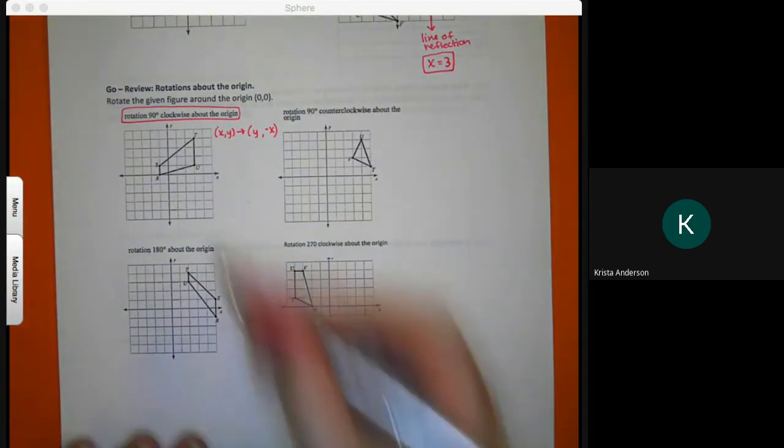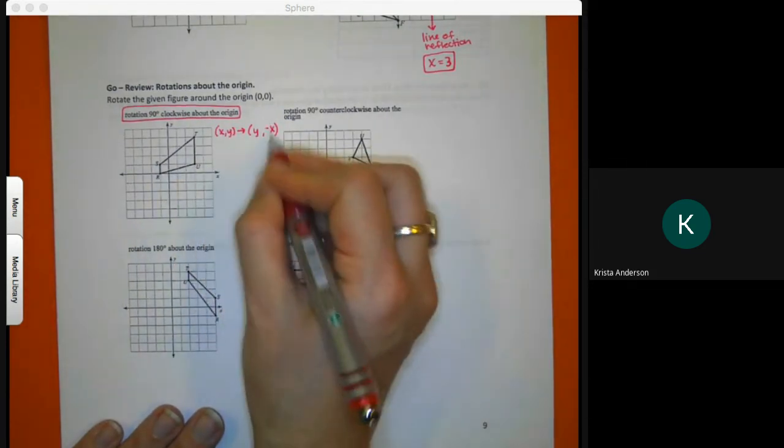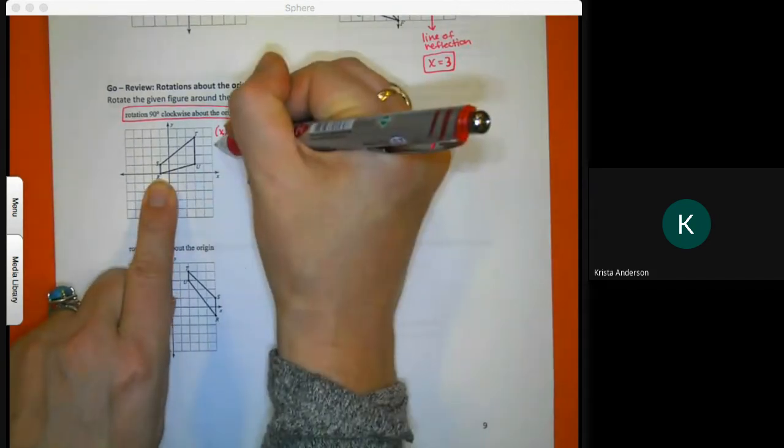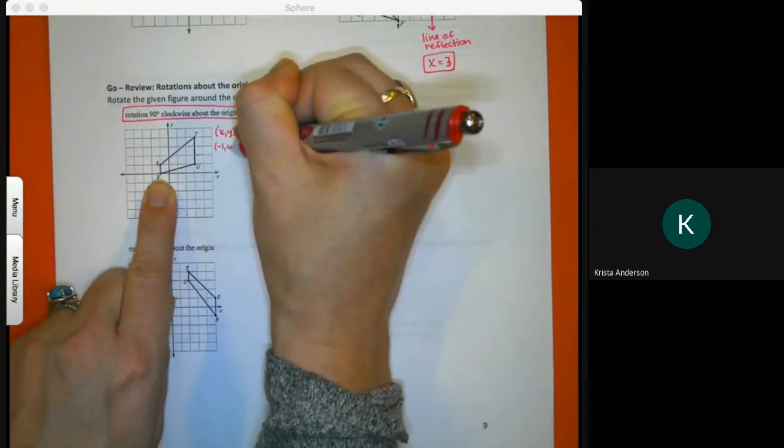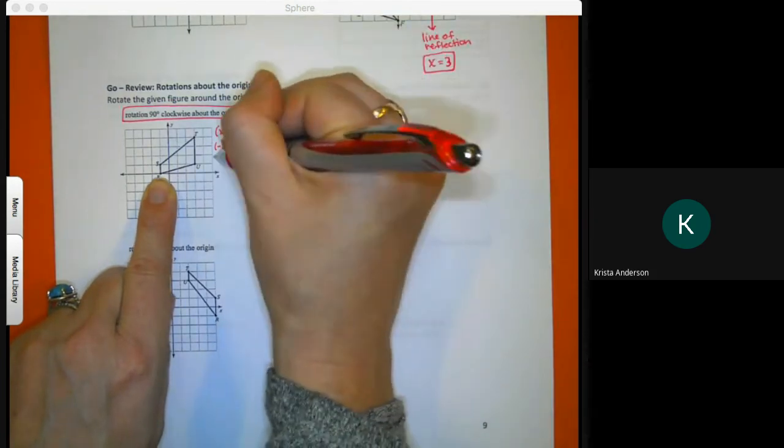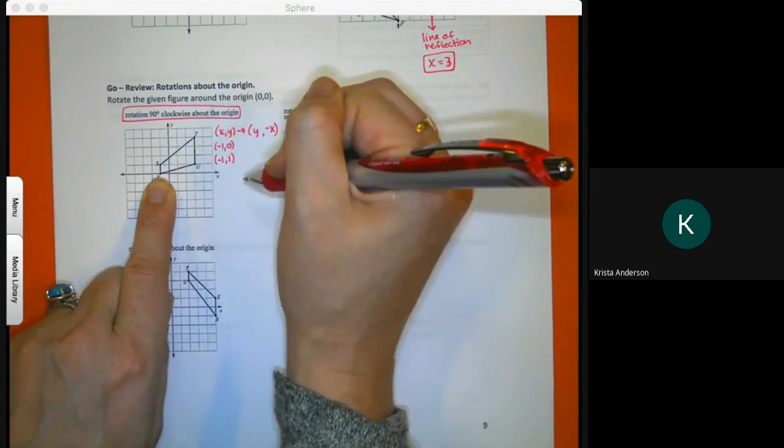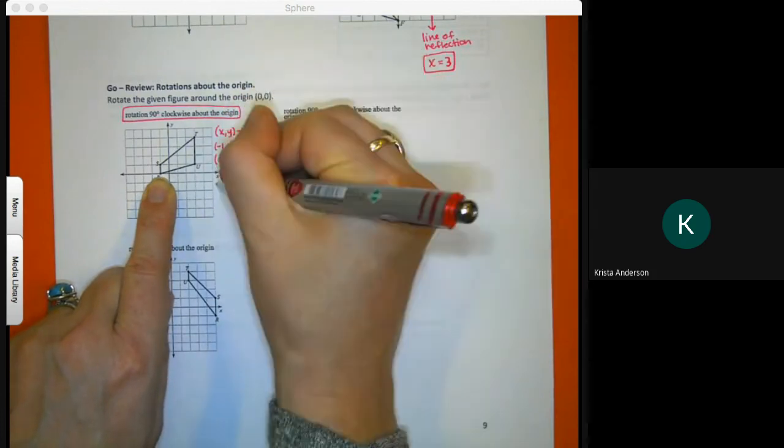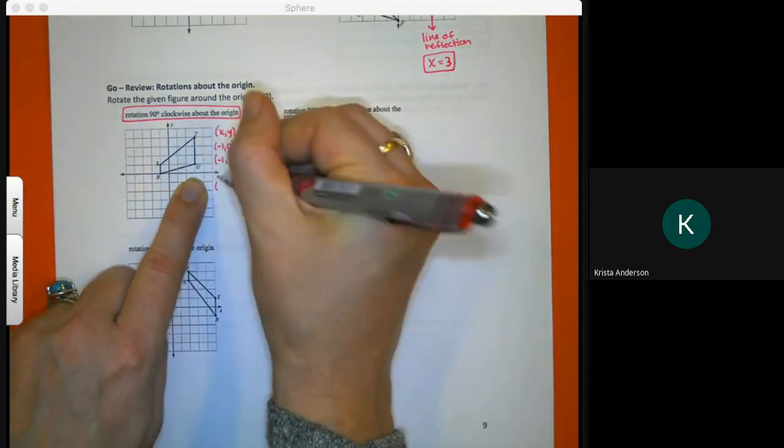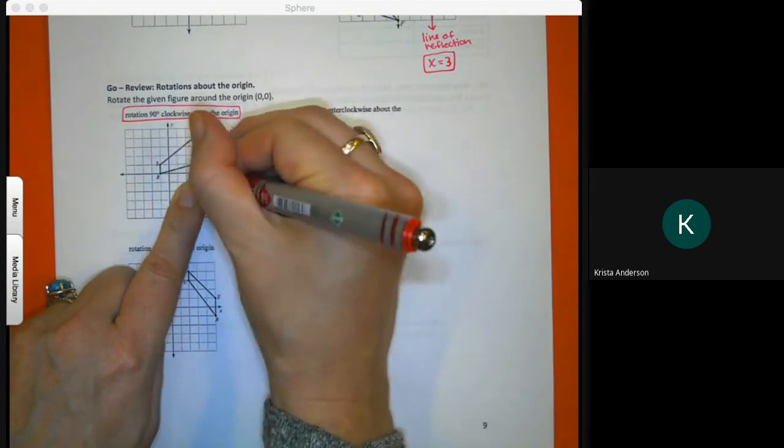That means I have to take all four points and adjust them 90 degrees. I'm going to start with R is at negative 1, 0. S is at negative 1, up 1. T is at positive 3, up 4. And U is at positive 3, up 1.